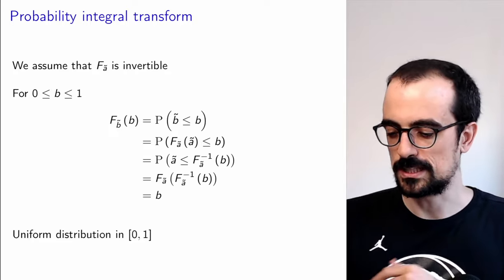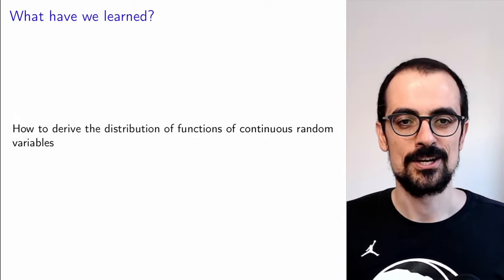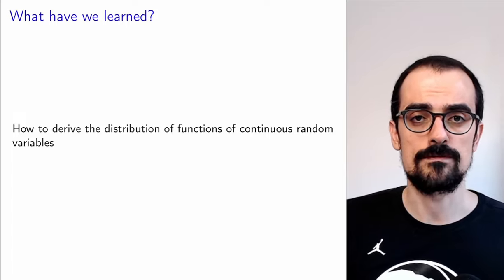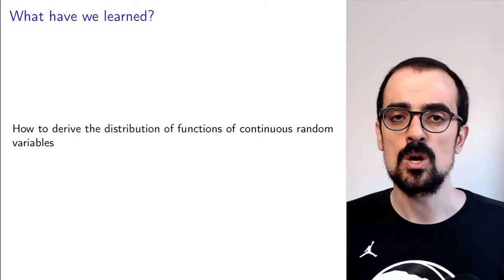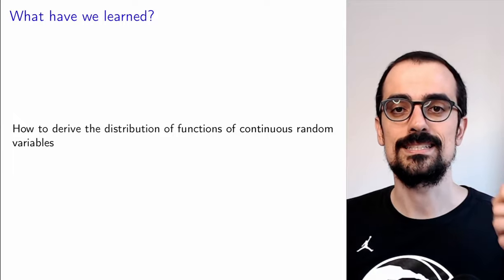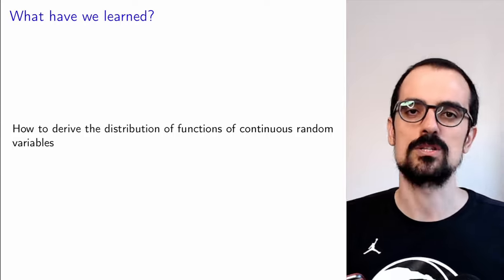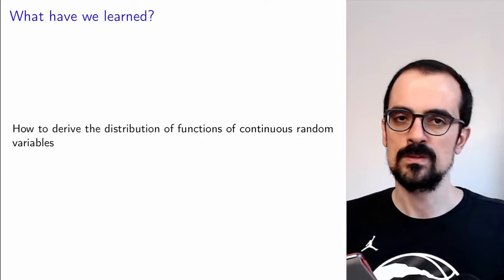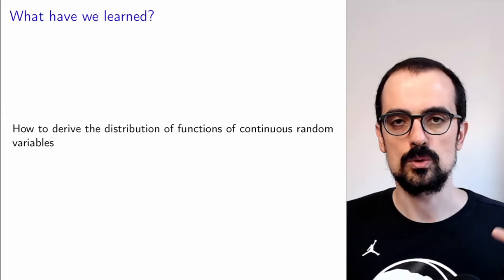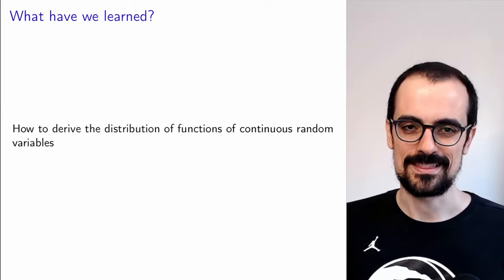So what have we learned? We have learned how to derive the distribution of functions of continuous random variables. We always do the same thing: write down the CDF of our new random variable, plug in the expression in terms of the old random variable, work with that expression, and eventually differentiate to get the PDF of the new random variable. And that's all — thank you very much.